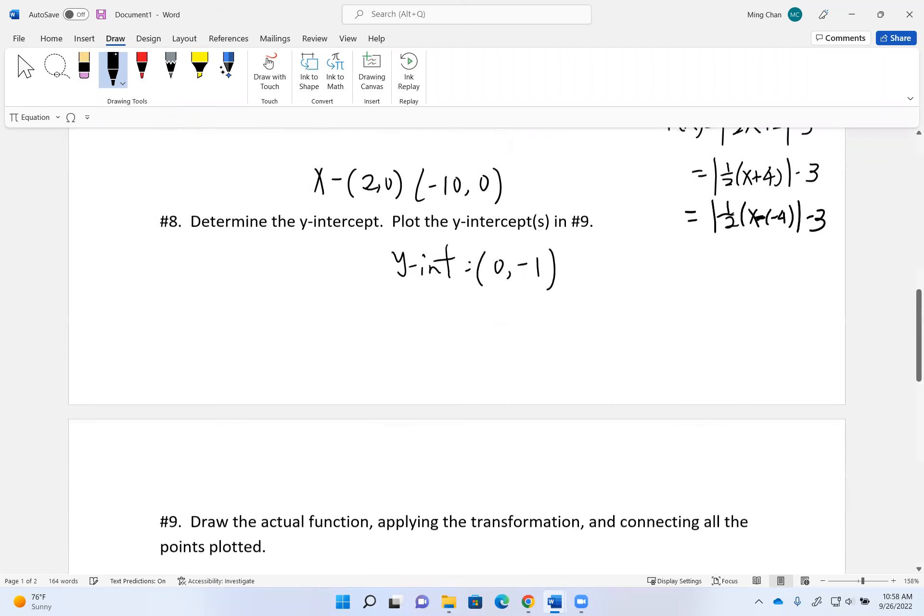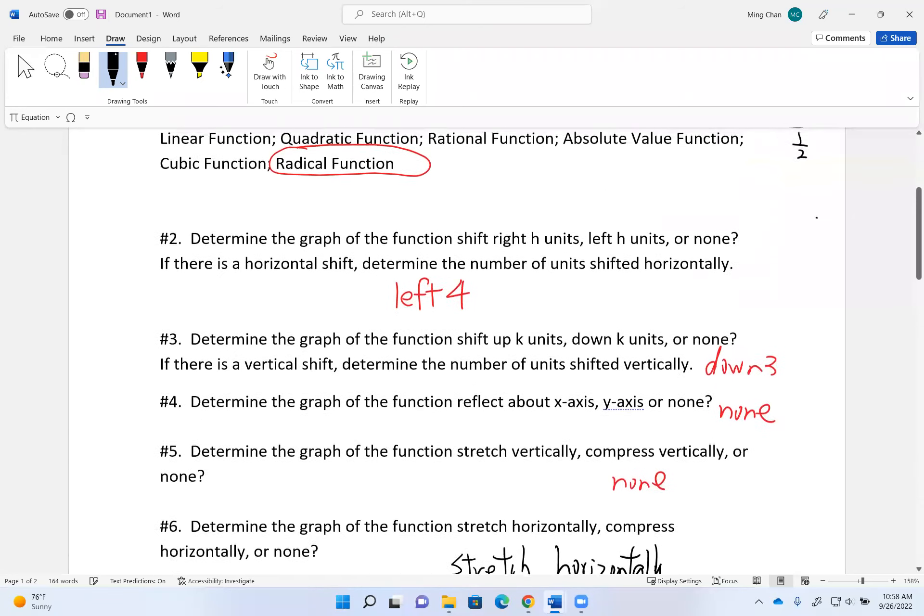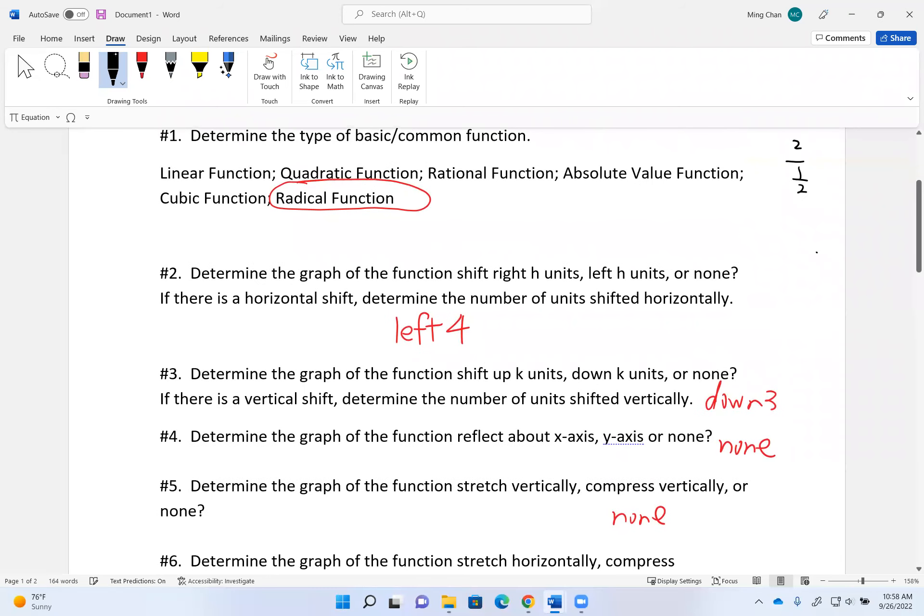The very bottom of the V, the absolute value function, every single point is going left four, down three. Remember in Topic 9, the original, most basic absolute value function has its bottom at the origin.